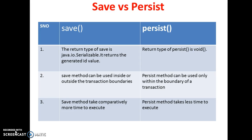The third difference is that save takes comparatively more time to execute when compared to persist, because once the object is saved it returns the identifier back from the save method. In the case of persist, it does not return anything, so that is the reason it takes a bit more time when compared to persist.